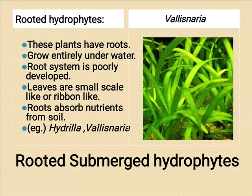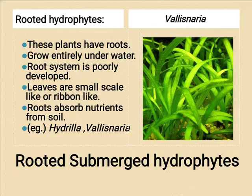Hydrophytes that are partially submerged have floating leaves with stomata through which gases can be exchanged. Best examples are Hydrilla and Vallisneria.